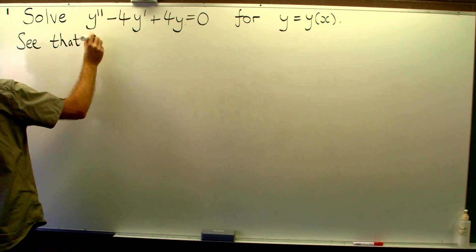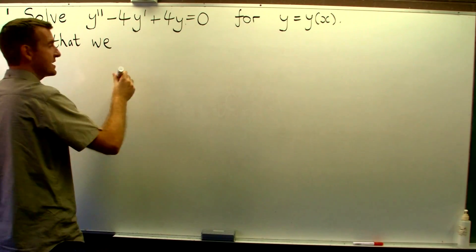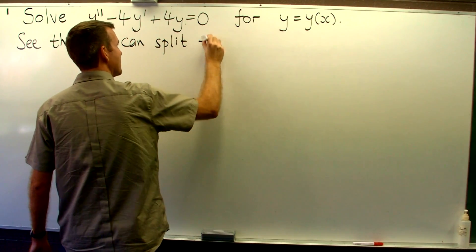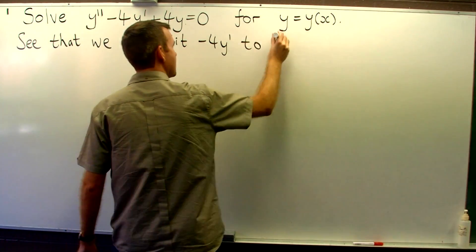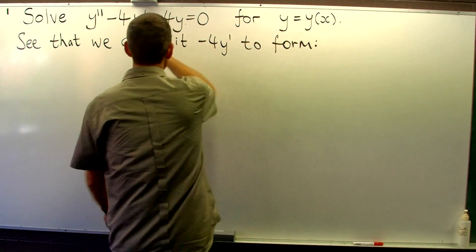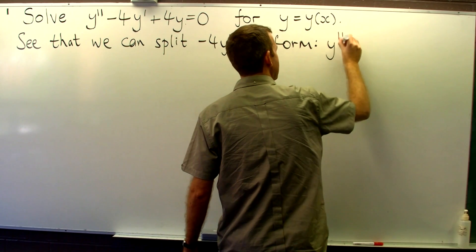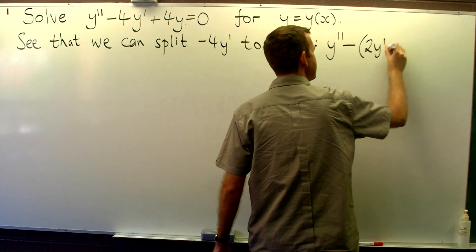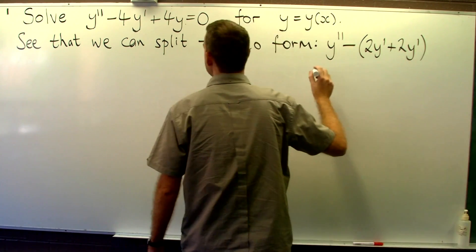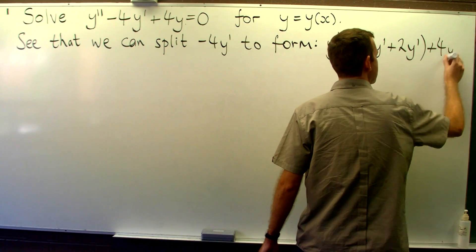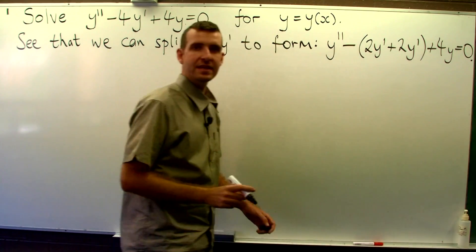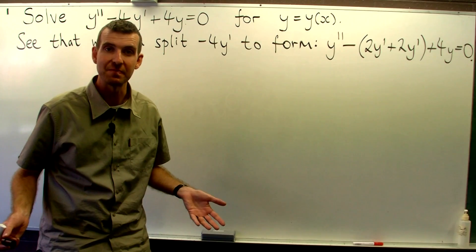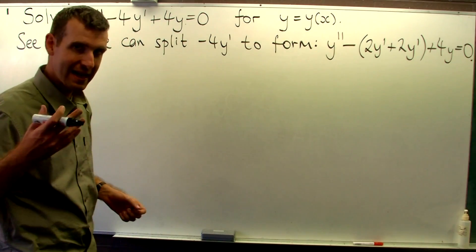So what we do is we split up our second term. Here I'm going to split it up into 2y' plus 2y'. Now, you may think, why did I choose this? Why didn't I split it up into, say, 3 and 1? Well, it'll come a little bit clearer later.